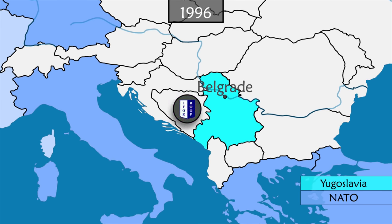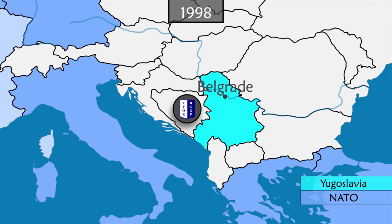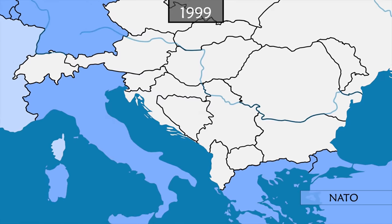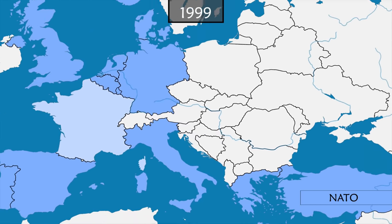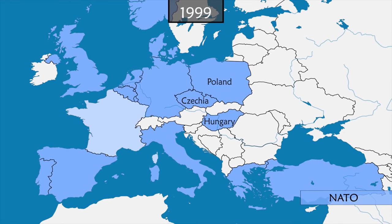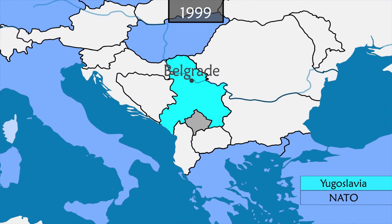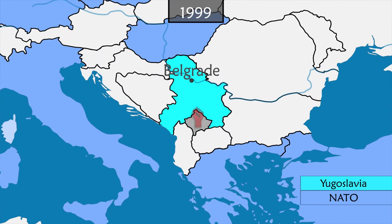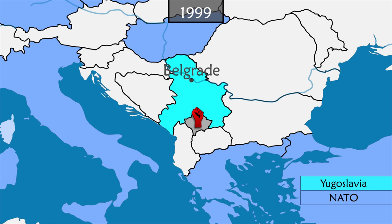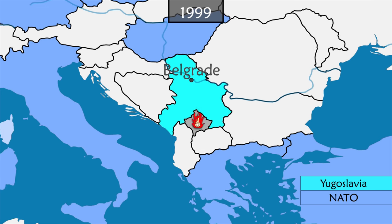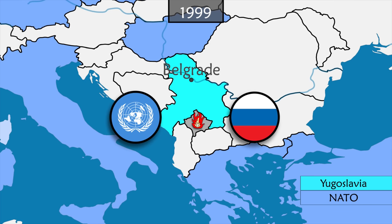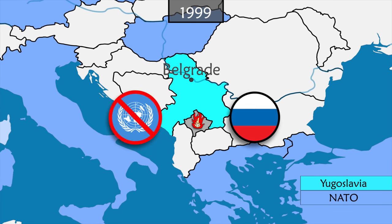An international peacekeeping force under NATO command is established to ensure peace. After years of meetings and talks, Poland, the Czech Republic, and Hungary join NATO on March 12, 1999. In Yugoslavia, Kosovo, mainly populated by Albanians, also has independence claims. A local armed group attacks Yugoslav forces and a civil war breaks out. The international community seeks to intervene, but Russia announces it will veto a military intervention at the UN.